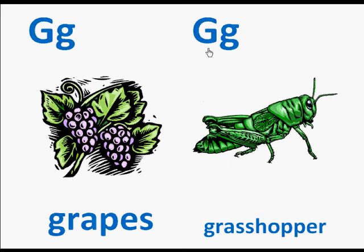Here we have the capital letter G, the small letter G, a picture of a grasshopper. Here's the word grasshopper. The letter G makes the sound guh. So we'll read this page: G, grasshopper, guh guh guh.